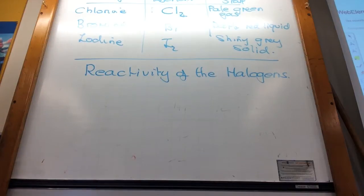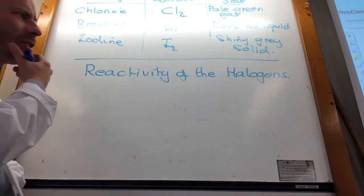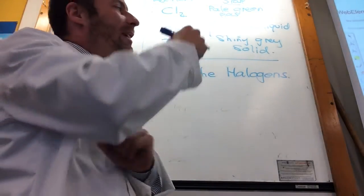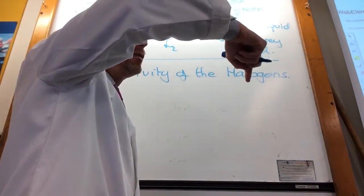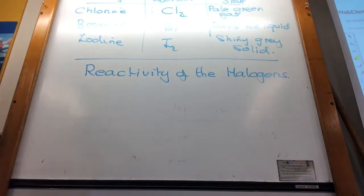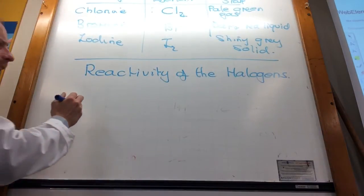We're going to talk very briefly about the reactivity of the halogens. For Group 1, we said that they got more reactive down the group. For Group 7, they actually get less reactive down the group.